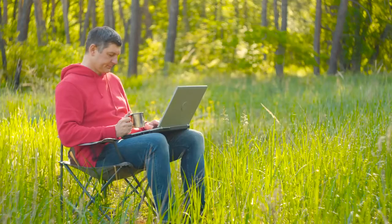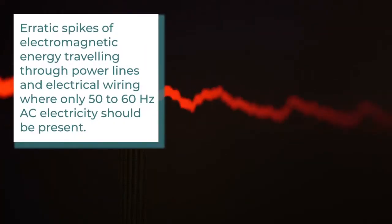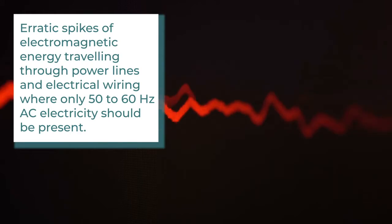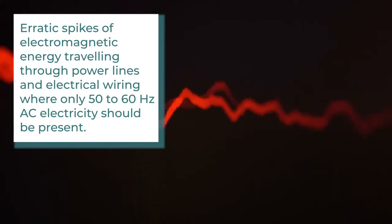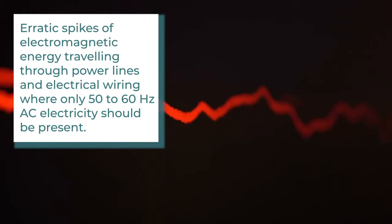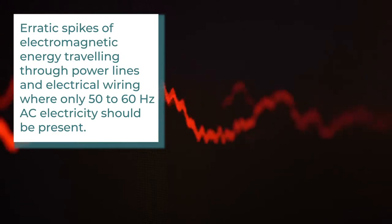Dirty electricity comes about as a result of modern technology. Dirty electricity is the erratic spikes and surges of electromagnetic energy travelling through power lines and electrical wiring, where only 50 to 60 Hz AC electricity should be present.